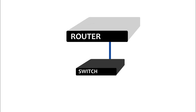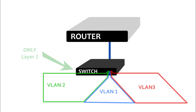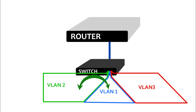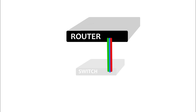You have a router, you have a switch, but you don't have a Layer 3 capable switch. You have multiple VLANs — a different subnet on each VLAN obviously — on your network. How do you route traffic between subnets, or really between these VLANs, on your own network without using every single interface on the router?